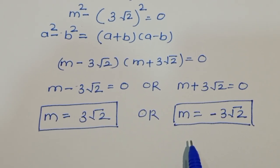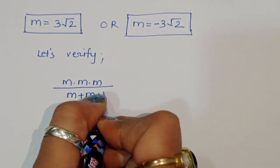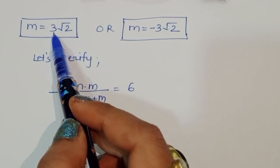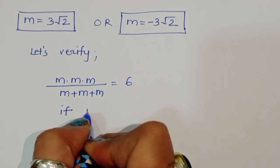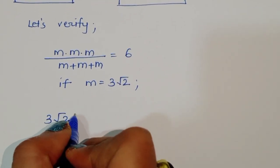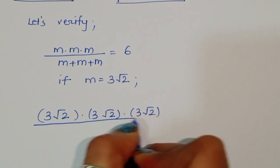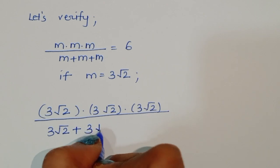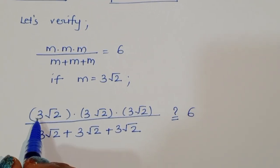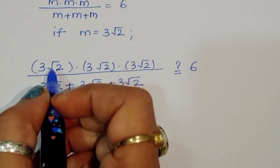Let's verify these solutions. Substituting m equals 3√2 into the original equation: (3√2 times 3√2 times 3√2) divided by (3√2 plus 3√2 plus 3√2). In the numerator, 3 times 3 times 3 gives 27, and √2 times √2 times √2 gives 2√2, so the numerator is 27 times 2√2.